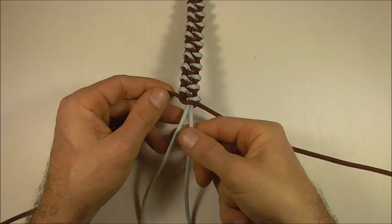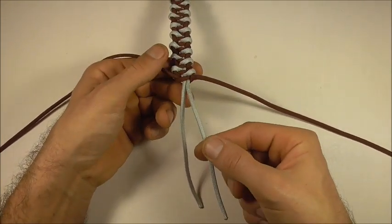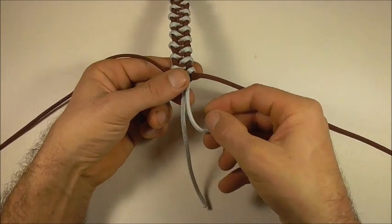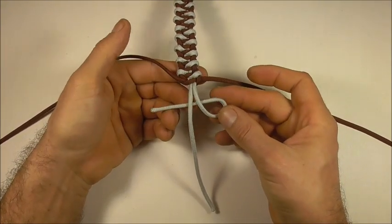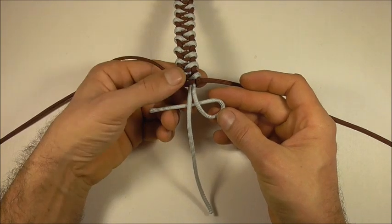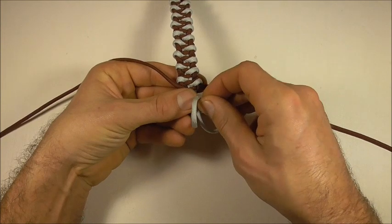Once you get to the end here we just need to tie a button. And the way I'm going to do that is to start with my right hand strand and form a loop coming in underneath. And then with my left hand strand I'm going to form a loop.